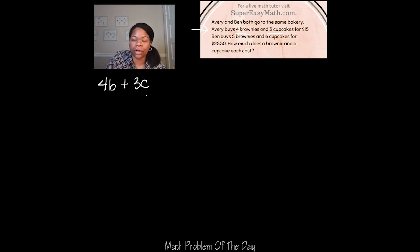You see I just abbreviated brownies with B and abbreviated cupcakes with C. And it says that costs $15. Now we can see this sentence has been turned into an equation very easily. Four brownies plus three cupcakes equals $15.